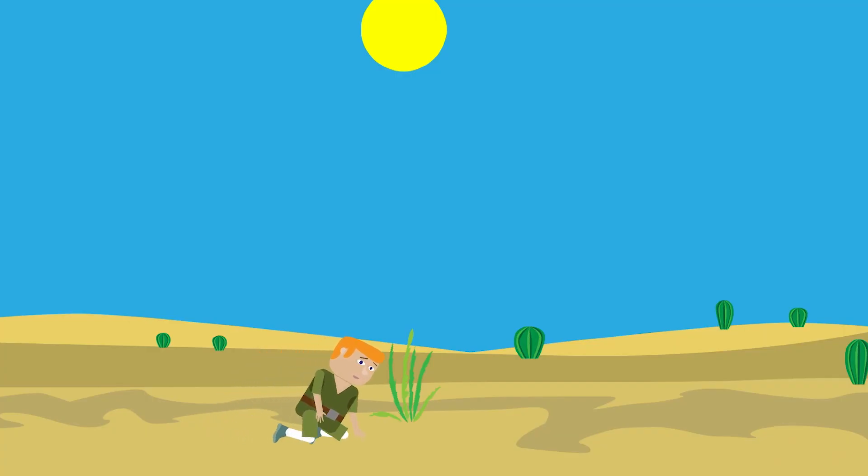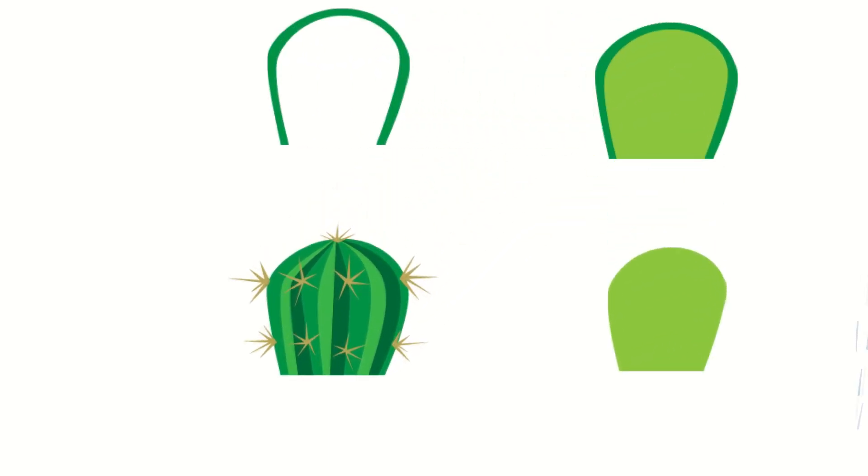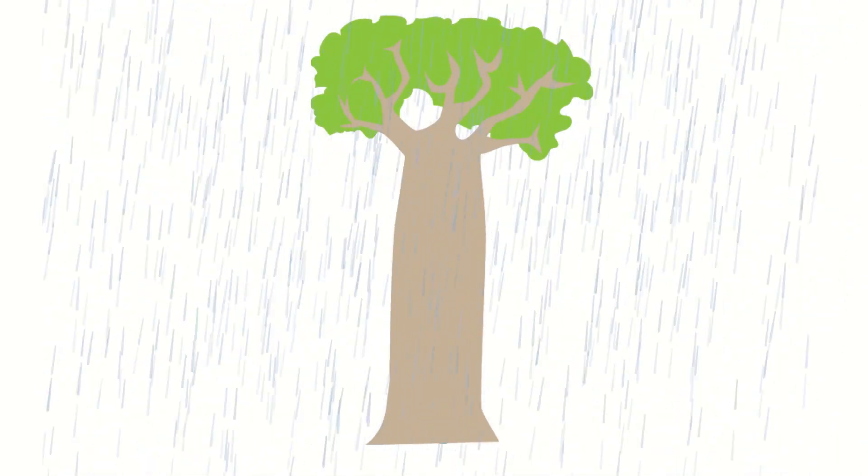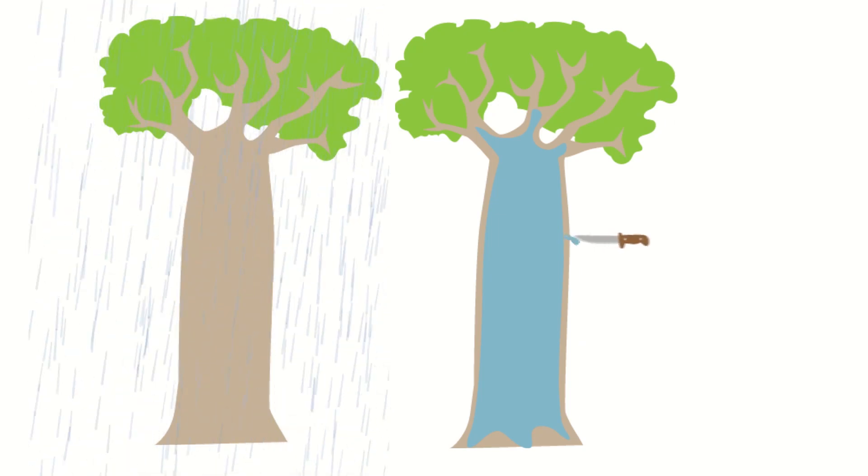Local flora is also suitable as a source of water. Cactus: cut out the pulp and squeeze it, but do not eat its flesh and the fruits. Baobab: it is useful only in the rainy season. You have to make a hole in the trunk and put a container under it.